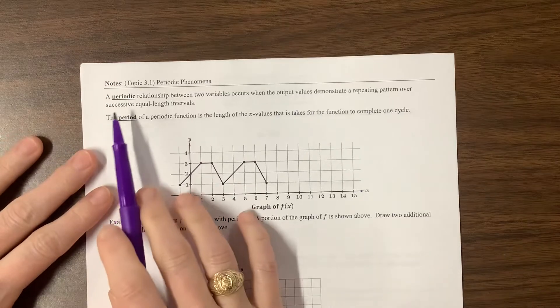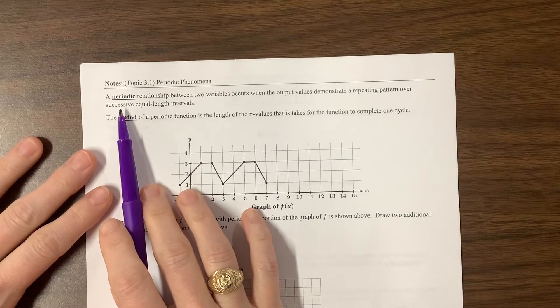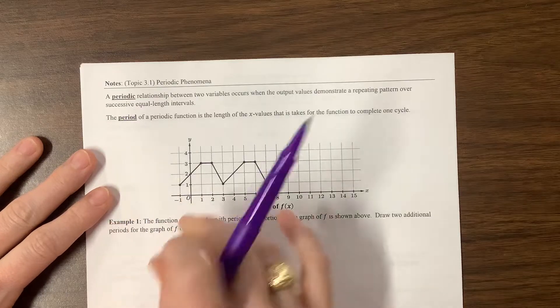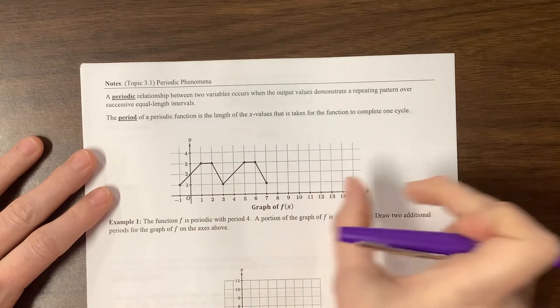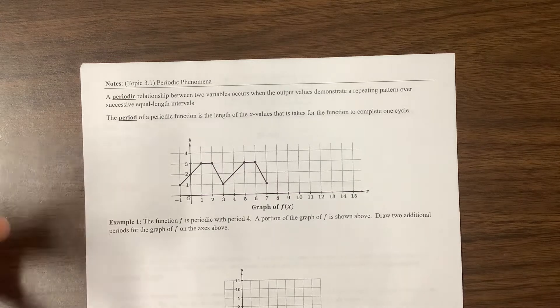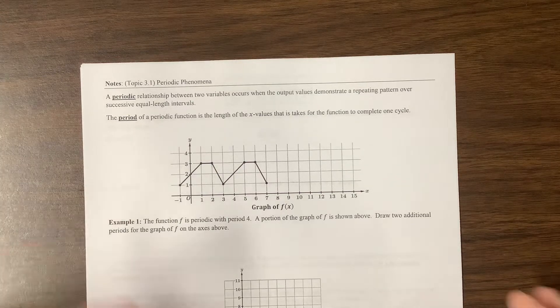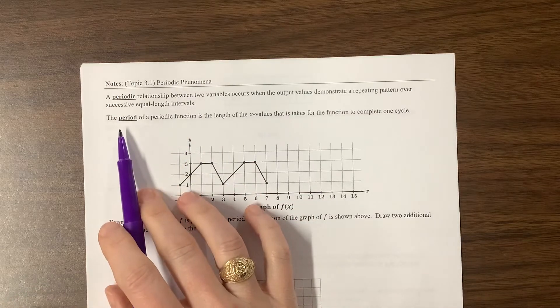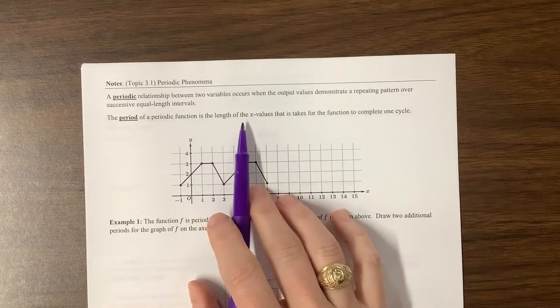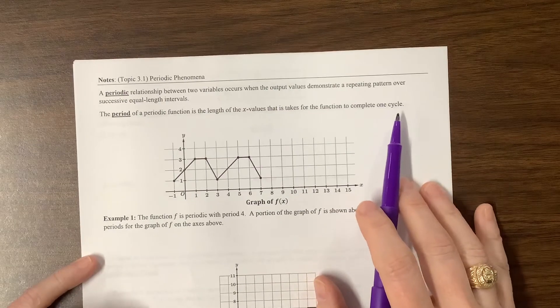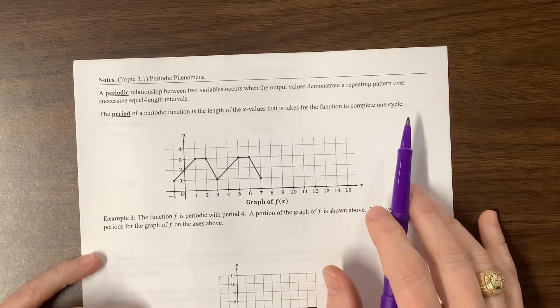On this one, we're talking about a periodic relationship. A periodic relationship is what happens when you have a repeating pattern. Something happens and it happens and then it happens and happens and it keeps happening. Most of the periodic functions we look at, it goes to infinity in both directions. And the period is, he defines it as the length of the x values that it takes for the function to complete one cycle. I like to say it as how long does it take it to do everything it's going to do.